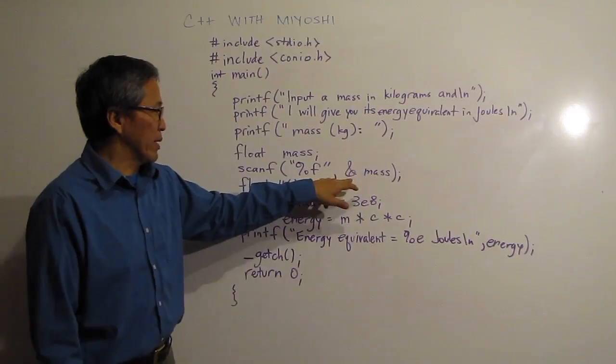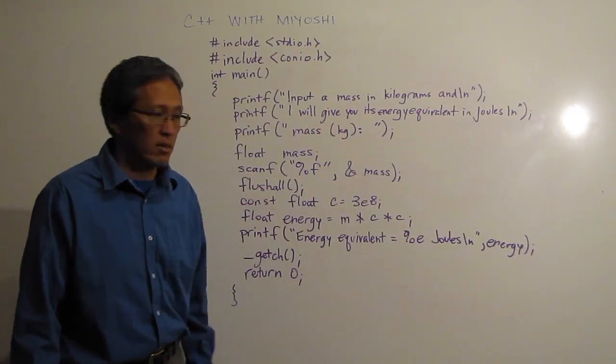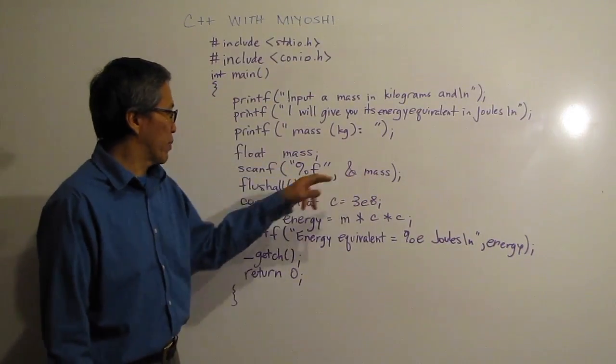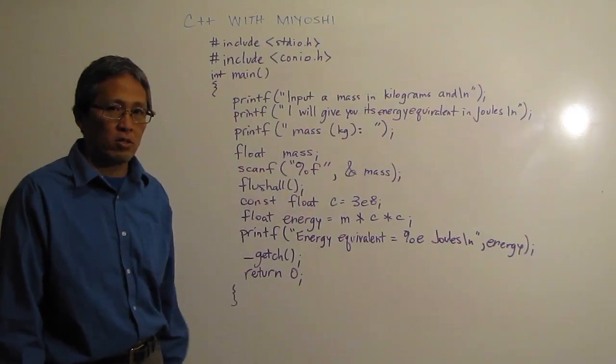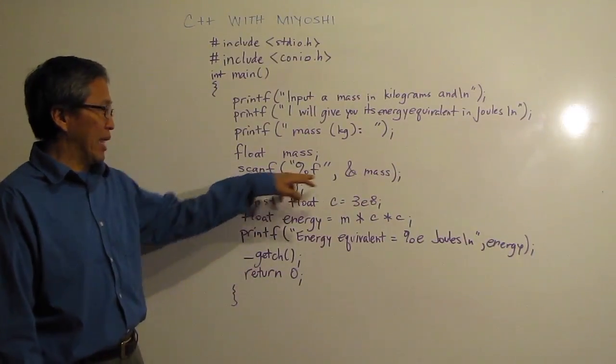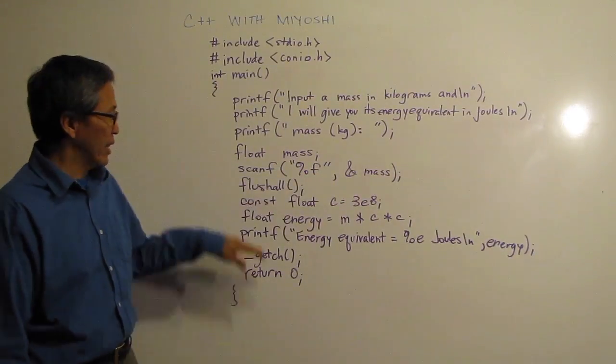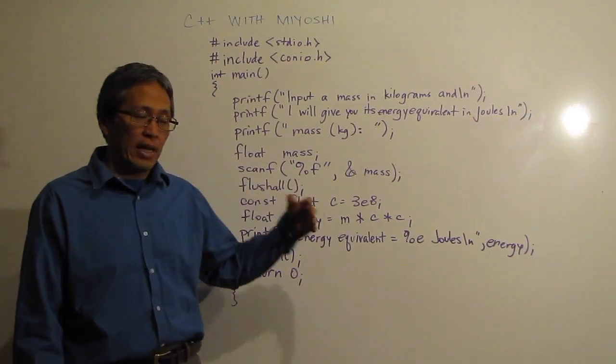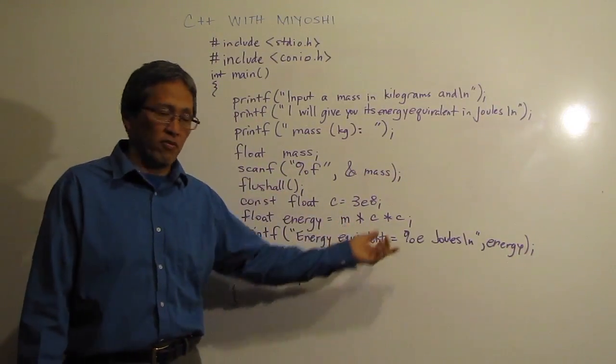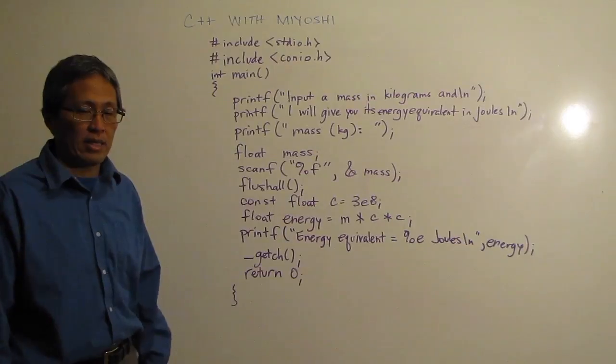So I'm scanning in my mass which is a float and I'm putting it into the memory location associated with mass, and that's just an input from the user. Then I have this fflush all. The fflush all takes what's called the buffer and it flushes out the buffer so it gets ready for the next input.